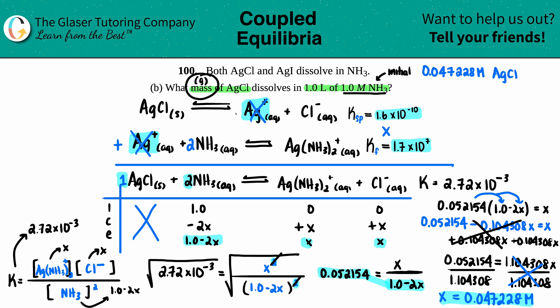I want mass. They told me I was in 1 liter, and molarity equals moles divided by liters. To solve for moles, we take molarity and multiply by liters. But if my liters is just one, anything times one is the same number. So I have 0.047228 moles of AgCl.